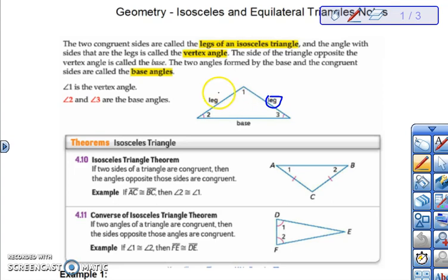The two equal sides are known as the legs and the other side is known as the base. Another thing to be aware of is that if we have two equal sides we will also have two equal angles.